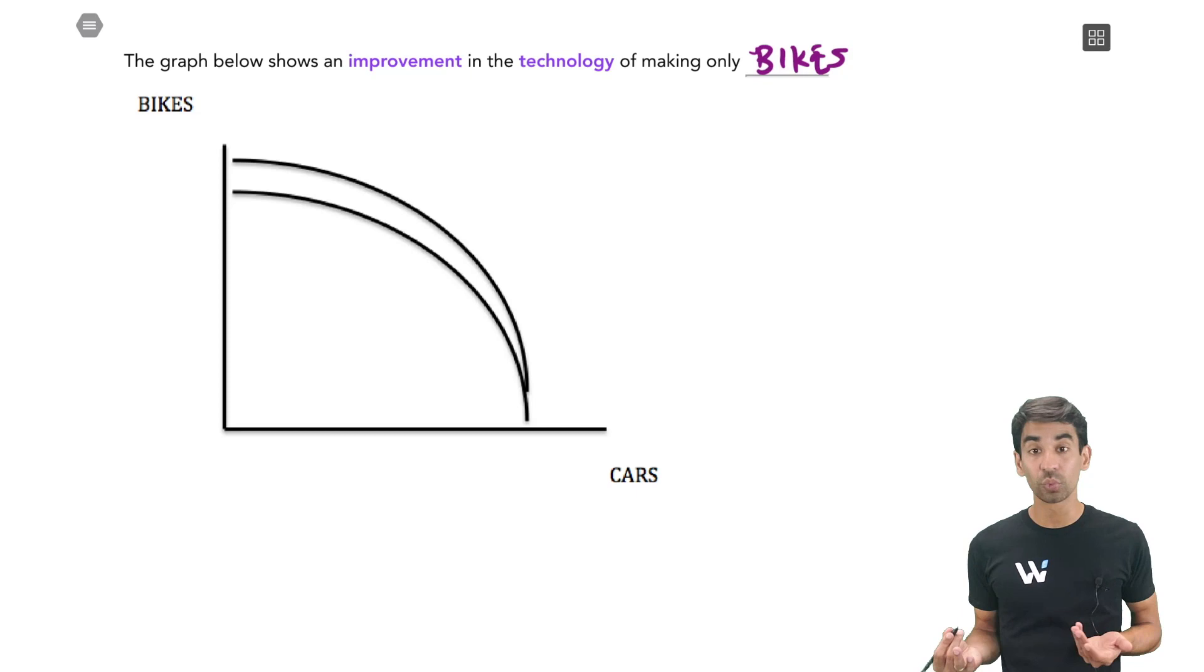And it doesn't only have to be technology. That's just one example. It could have also been like there's better education for the bike industry, better training, anything like that, that's going to make those workers more productive in the bike industry. It just means that they can make more of that product.